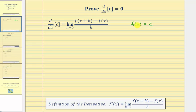And therefore, for any input, the output is going to be the constant c. So f of the quantity x plus h and f of x would both be equal to c.